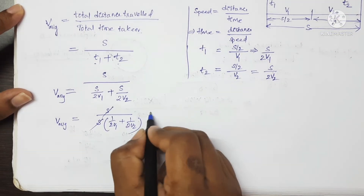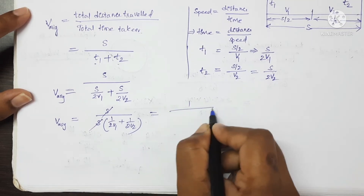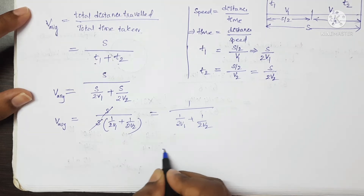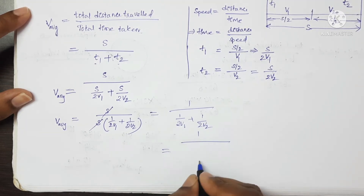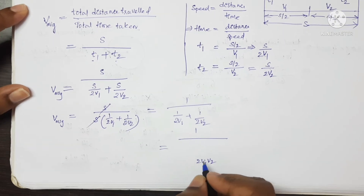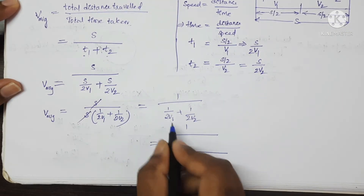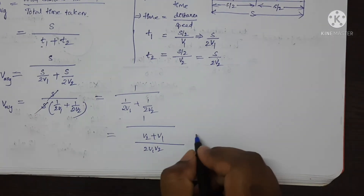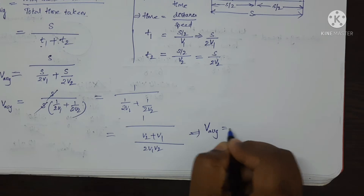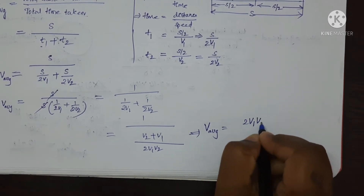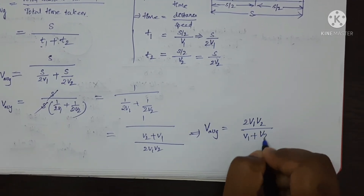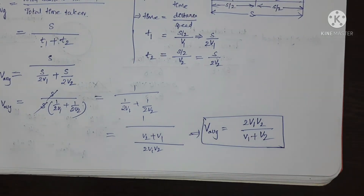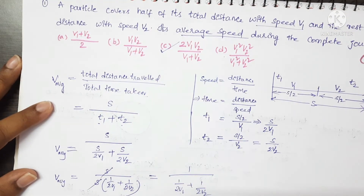Simplify by taking s common from the denominator: s cancels, leaving 1 upon [1/(2v1) + 1/(2v2)]. Taking LCM gives 1 upon [(v2 + v1)/(2v1v2)], which simplifies to 2v1v2/(v1 + v2). This is the average speed. Option C is the correct answer.